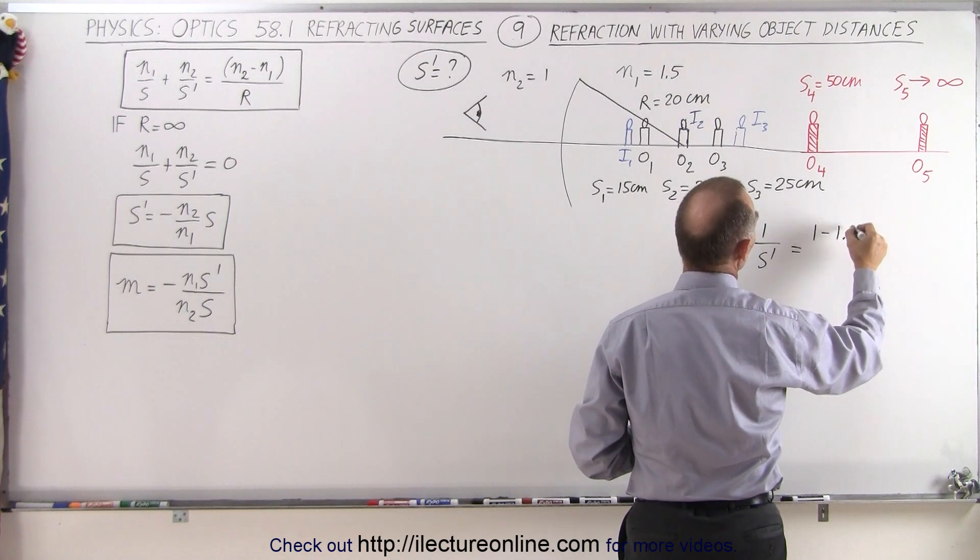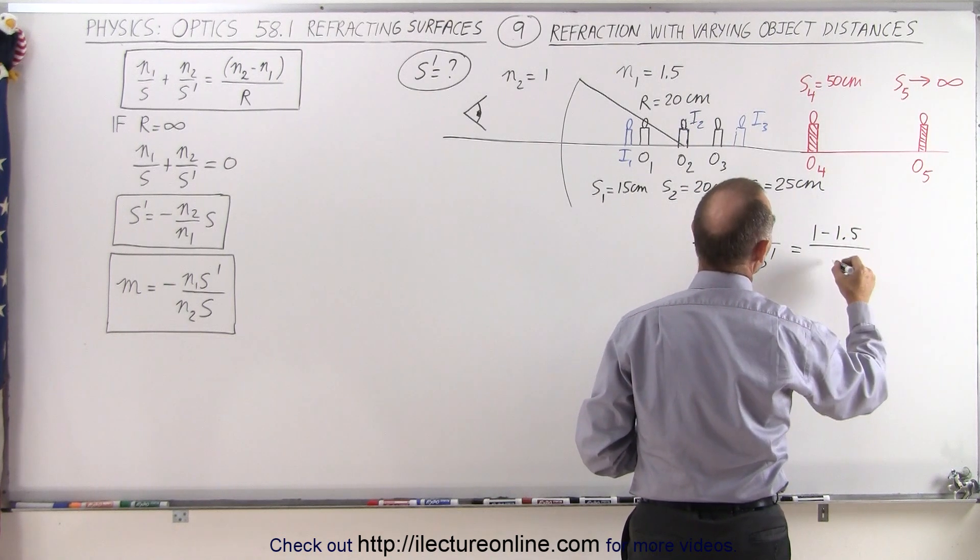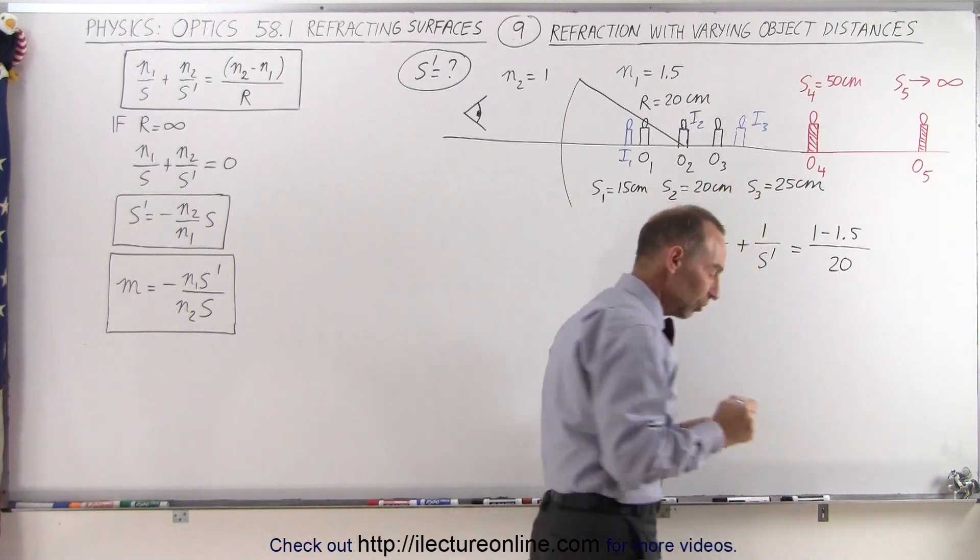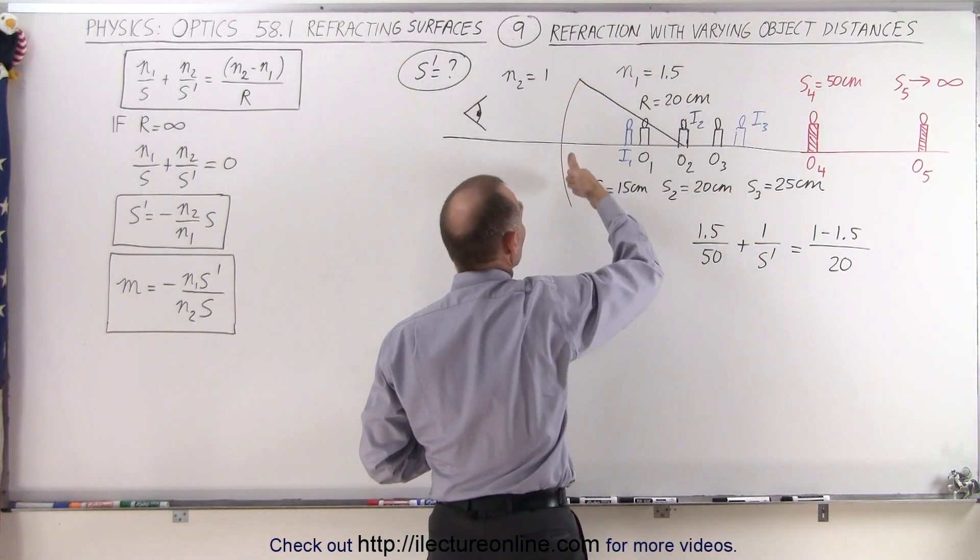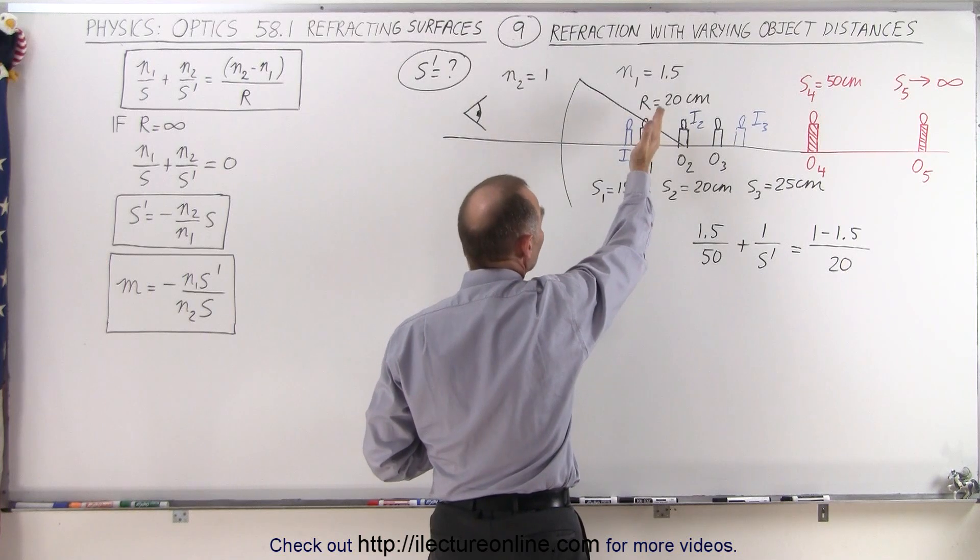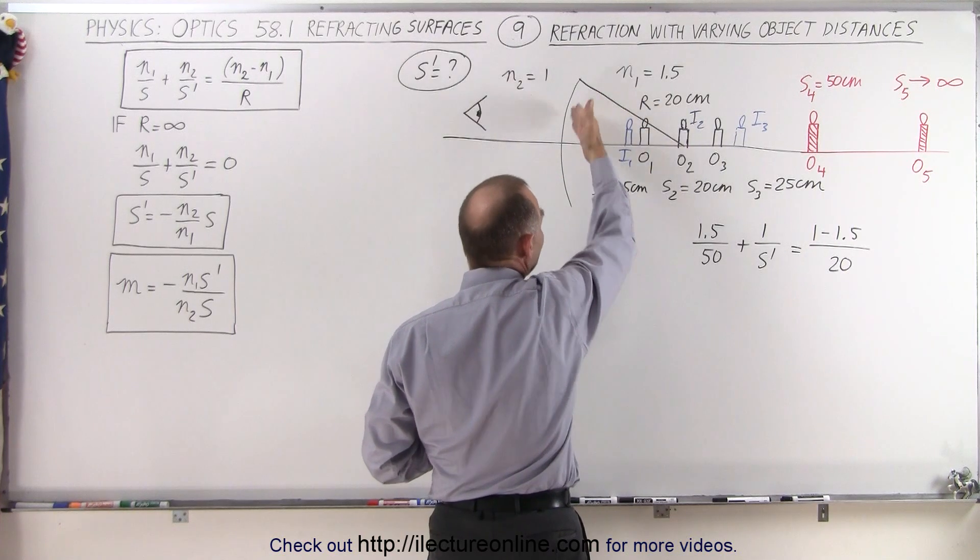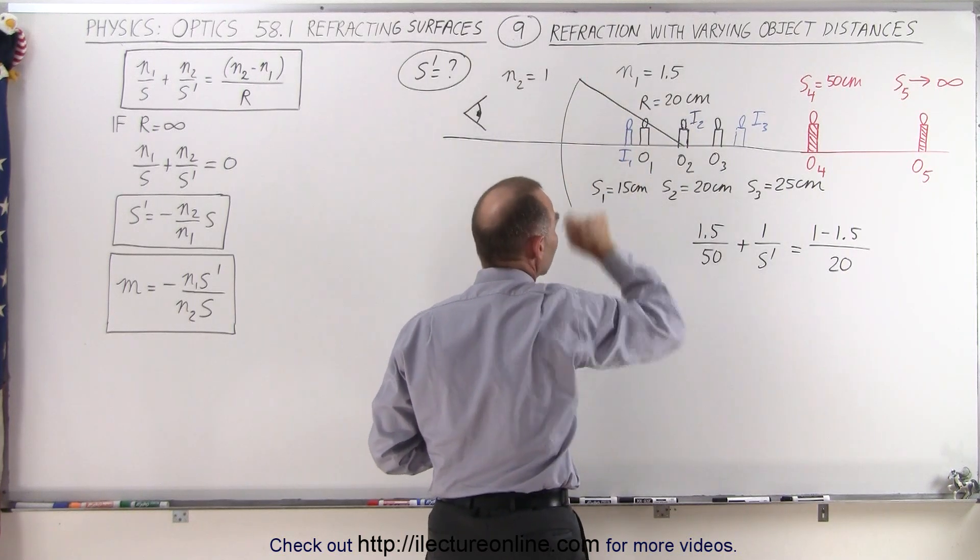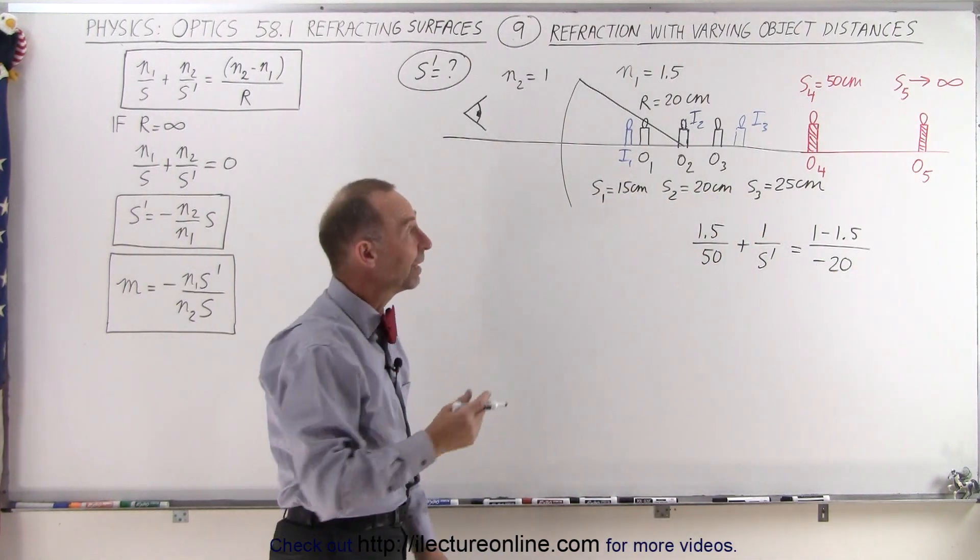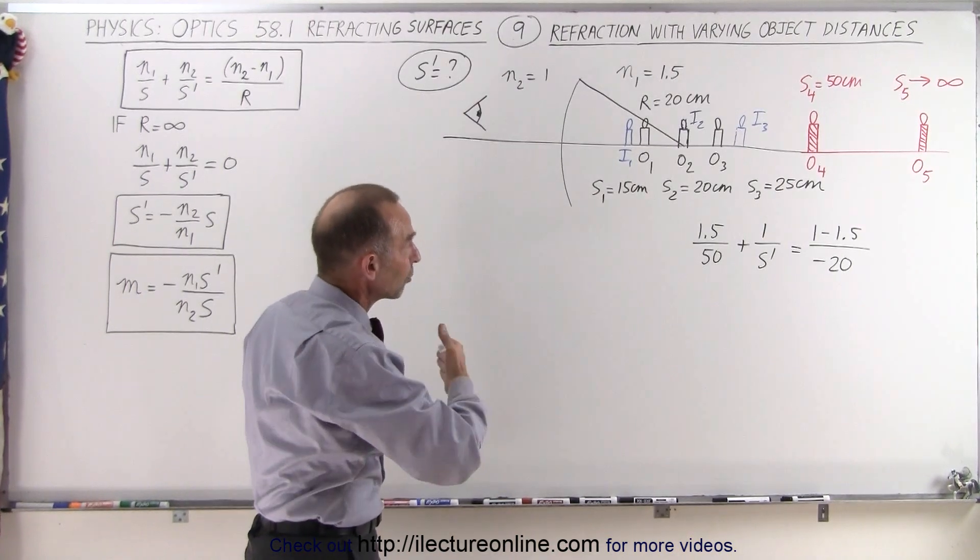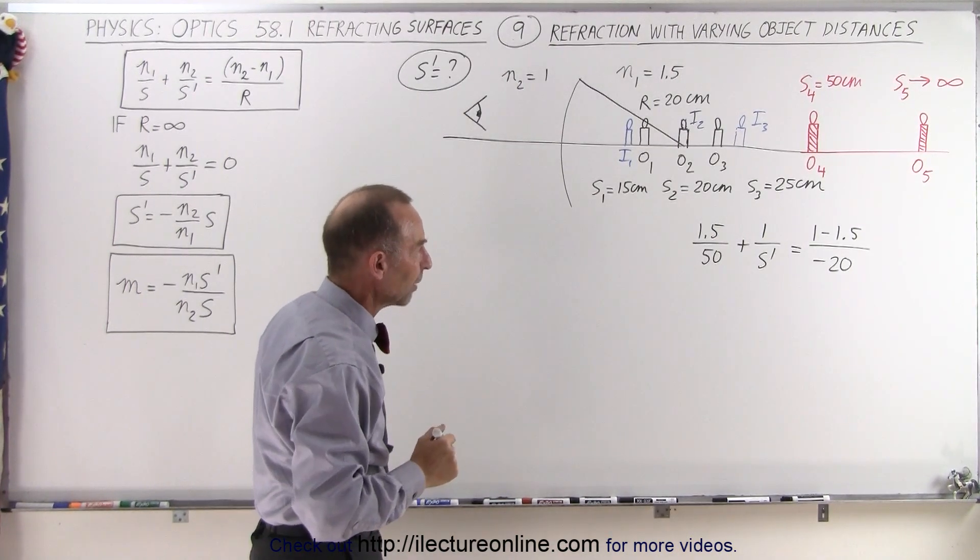...1 minus N1, 1.5, all divided by the radius of curvature. And again, since the curvature is away from the object, so it's basically a concave curvature relative to the object, we must have a negative radius of curvature. It's only positive if the curvature is towards the object, which means if it's convex relative to the object.